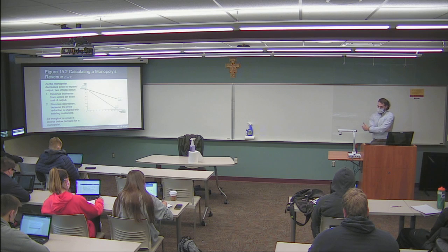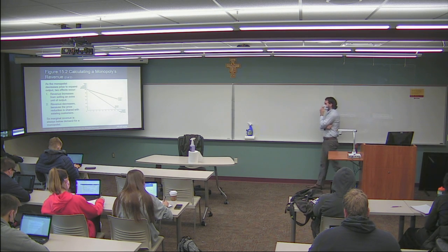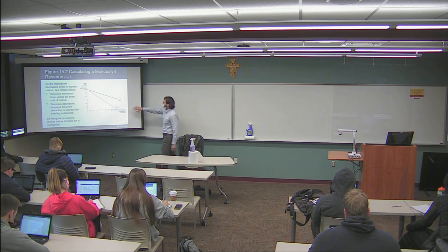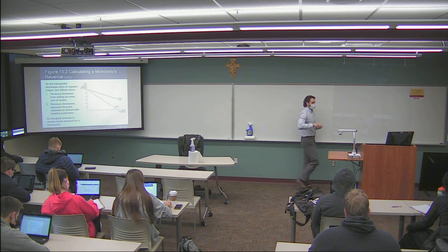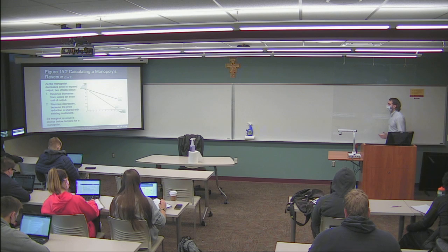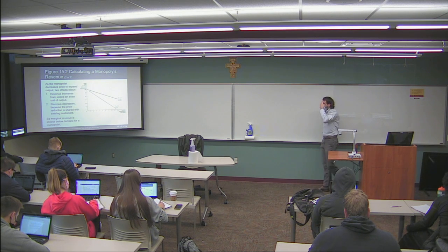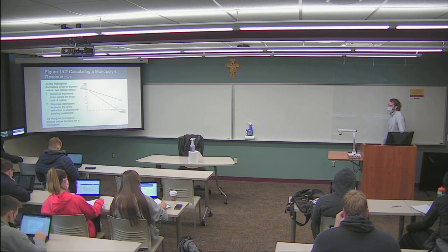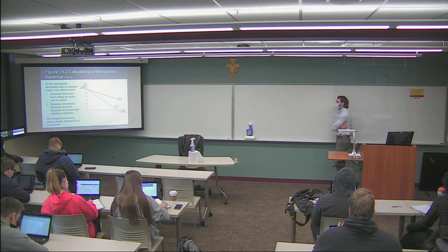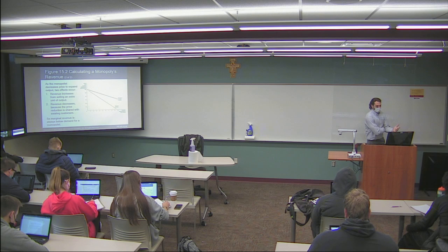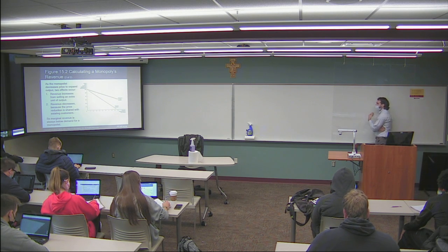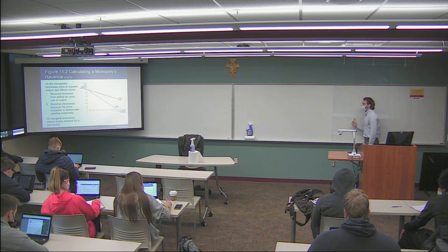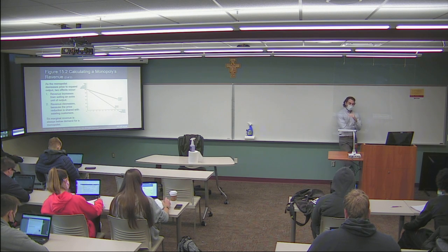Here we have a graph showing marginal revenue and demand for a monopolist. The demand curve equals the average revenue curve. The marginal revenue is much lower. You have revenue increasing from selling an additional unit, but revenue also decreasing because of the price reduction — existing customers who would have purchased at the higher price are now paying less. That's why, despite the increase in sales, the marginal revenue curve is below the demand curve. In perfect competition, both were horizontal and the same; here they're different, with the demand curve above the marginal revenue curve.